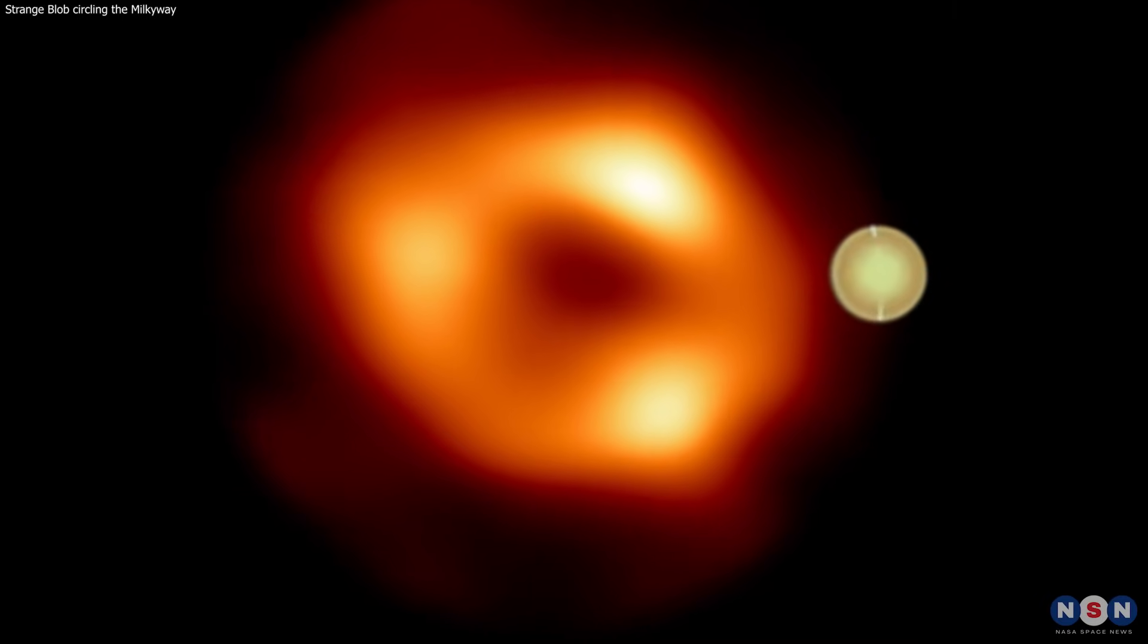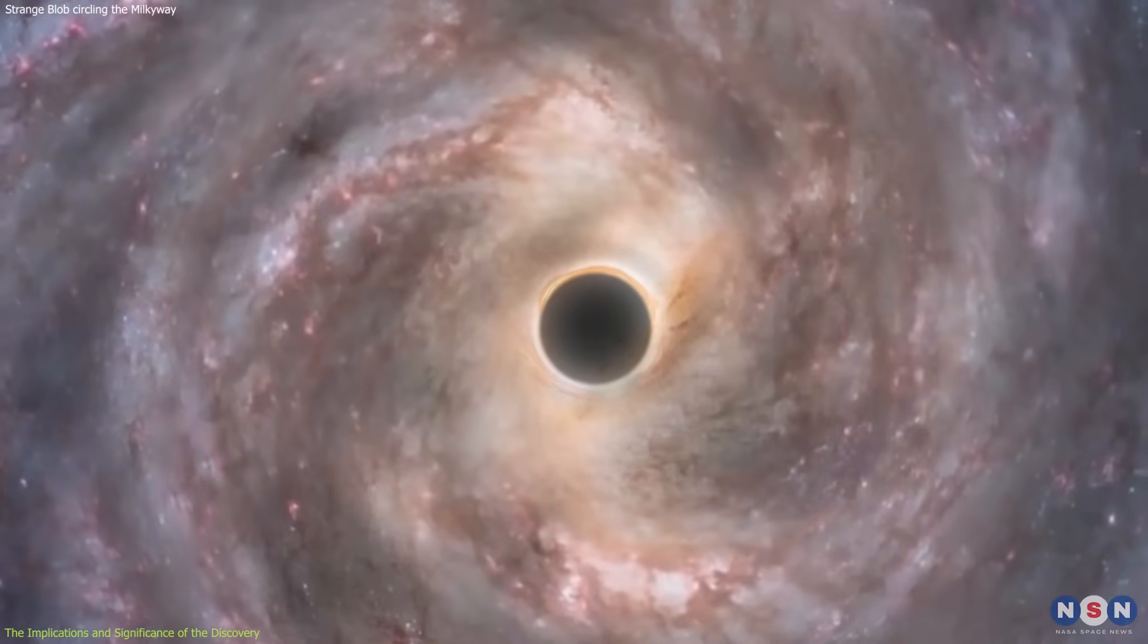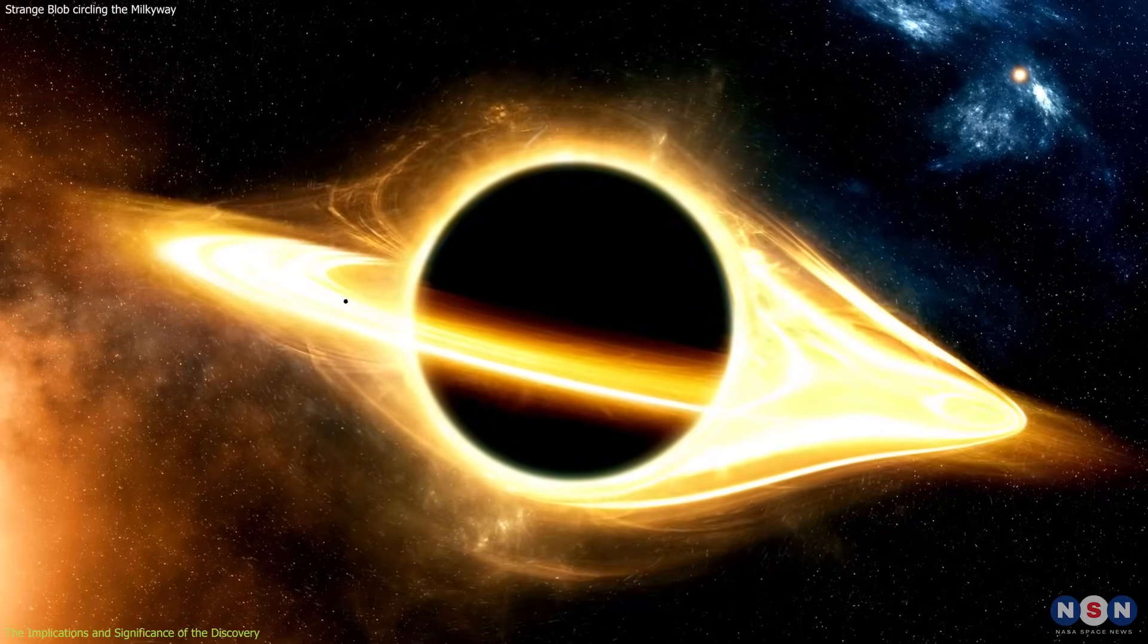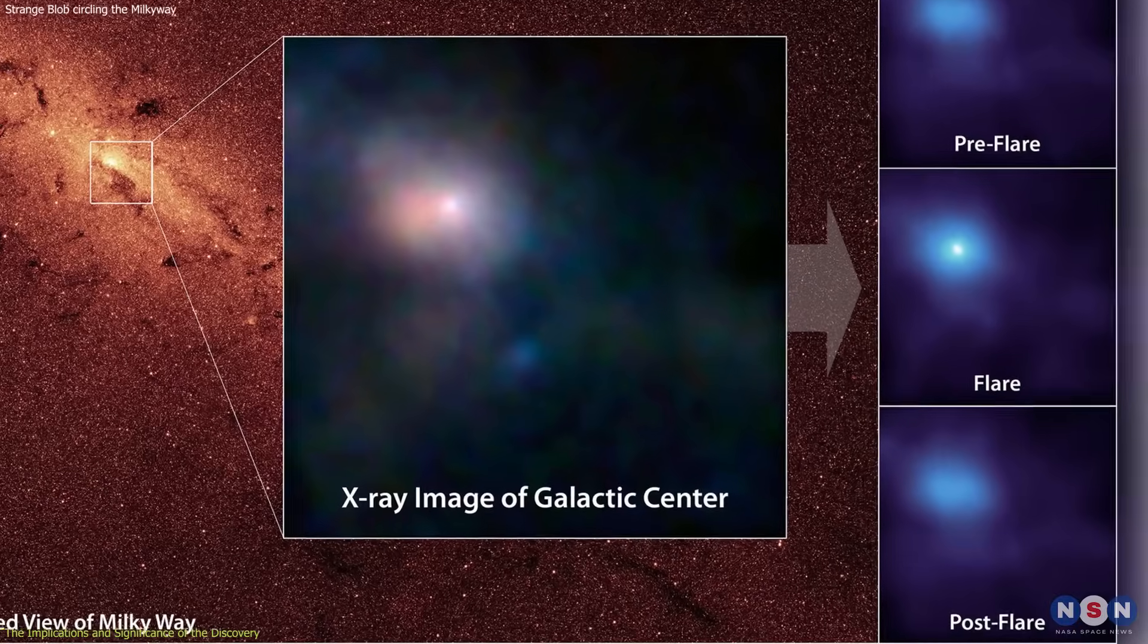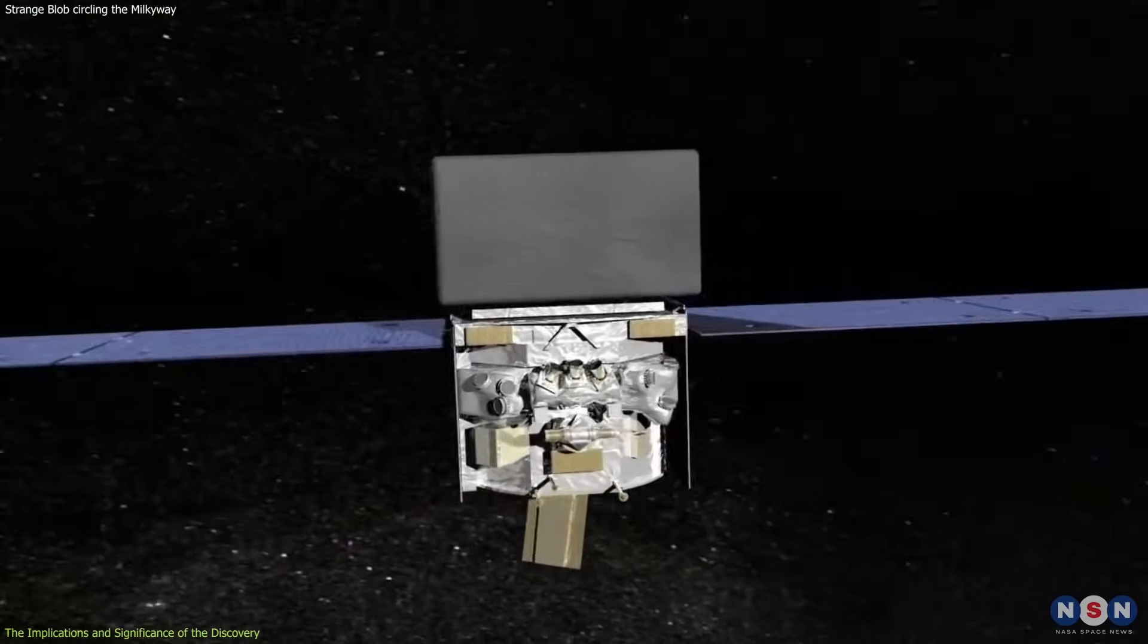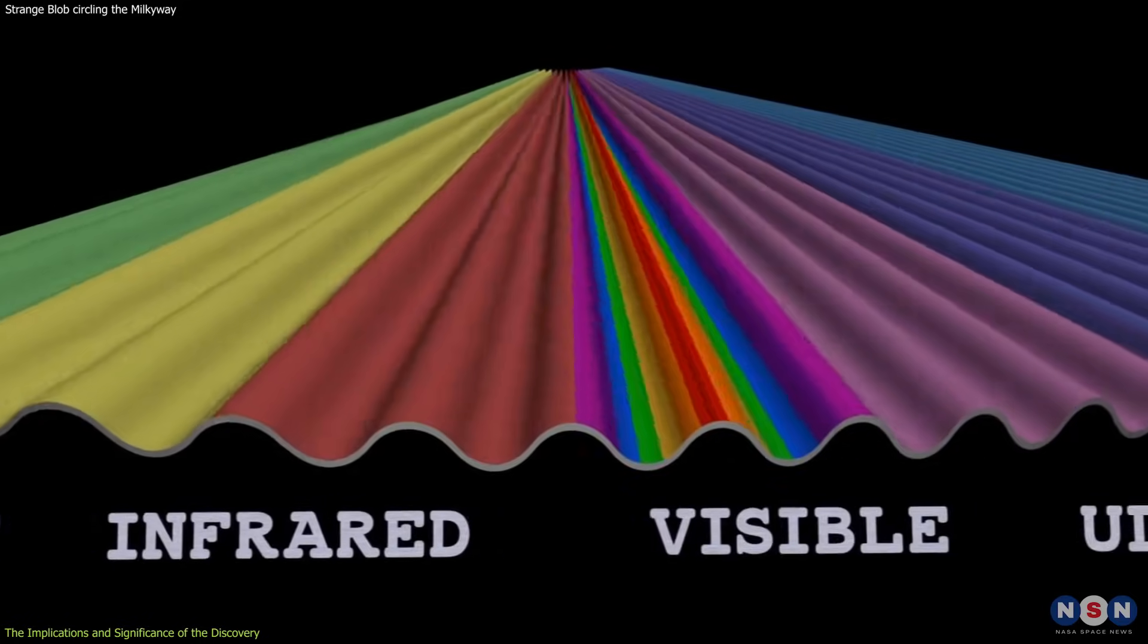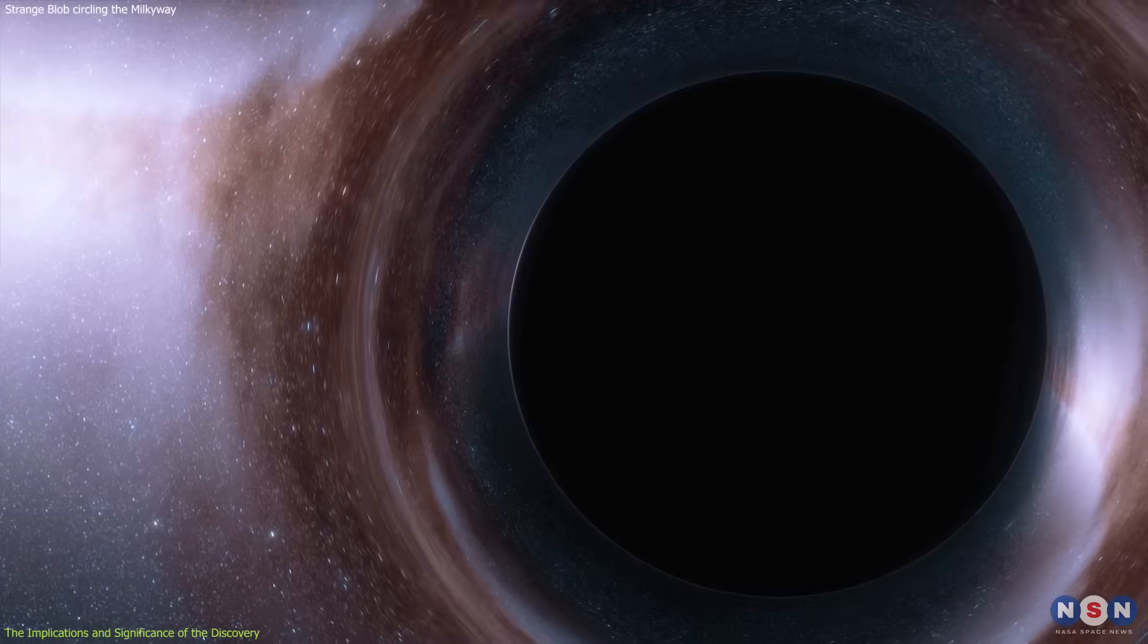This discovery of the blob of gas orbiting the black hole at the center of the Milky Way is very rare and fascinating, and it has many implications and significance for our understanding of the black hole and our galaxy. First of all, it shows that the black hole is not as quiet and dormant as we thought, and that it can occasionally produce powerful and periodic flares of radiation that can be detected by different telescopes. This gives us a chance to study the black hole's environment and activity in more detail and in different wavelengths, and to test our theories and models of how black holes work and interact with their surroundings.